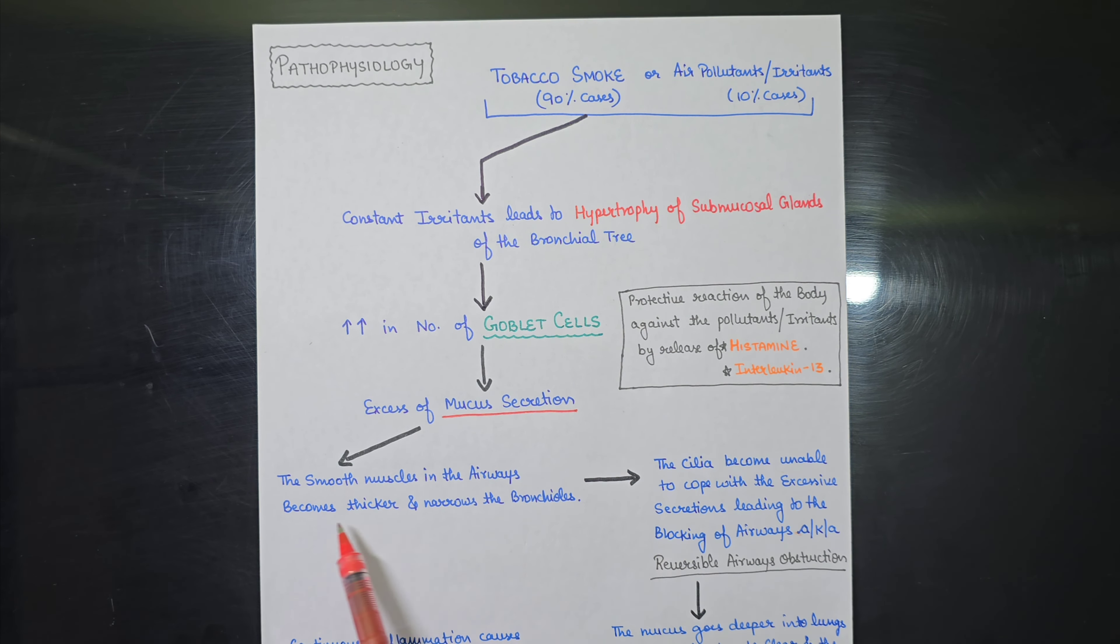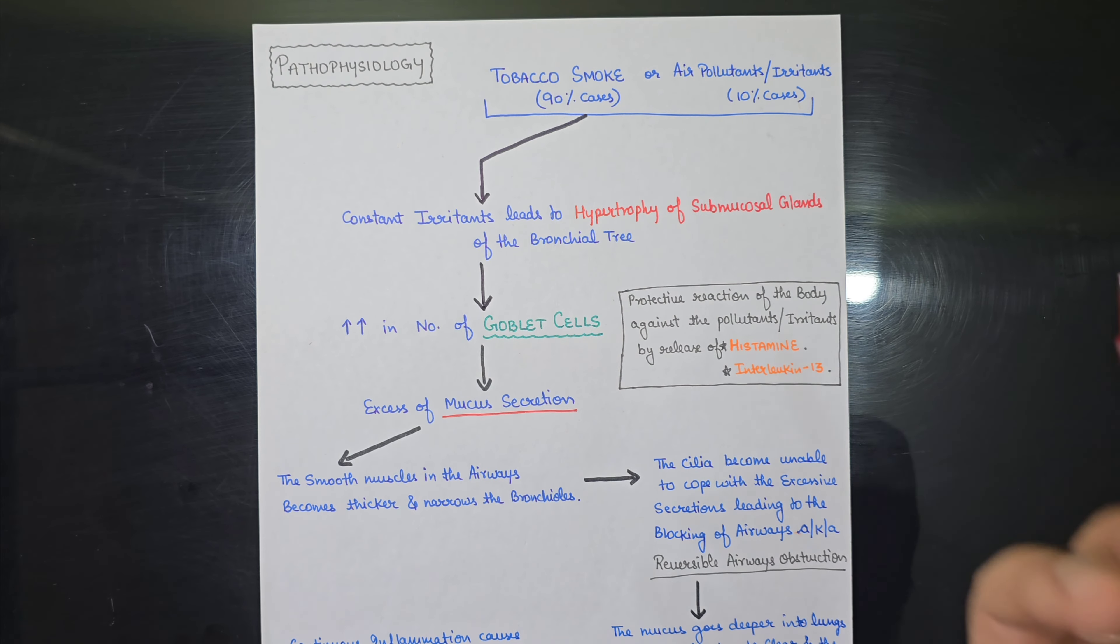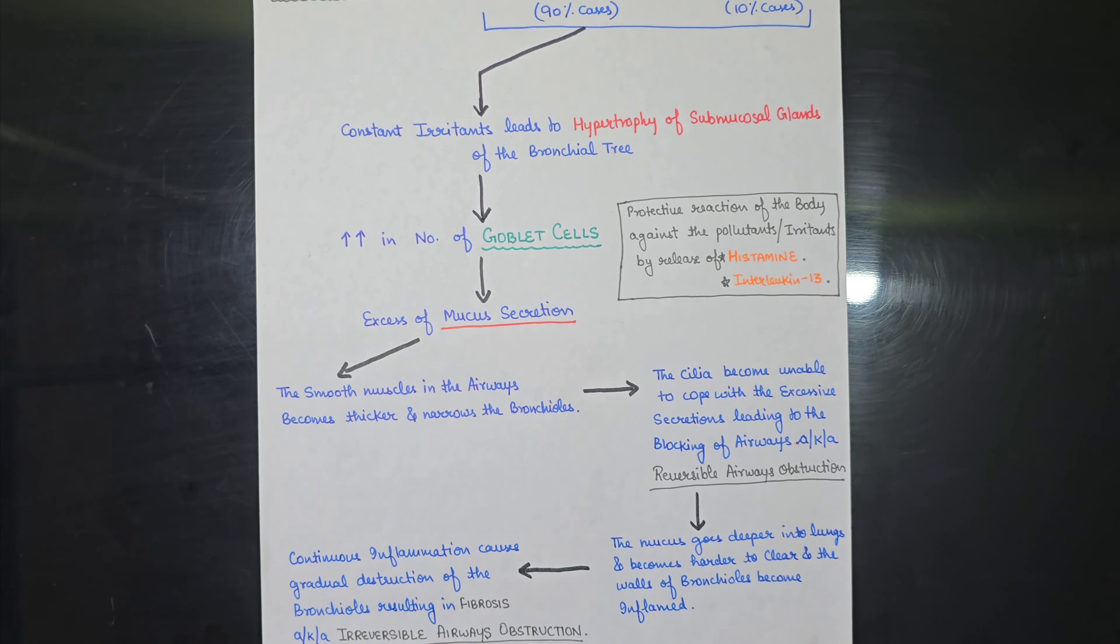And due to excess of mucus secretion, the smooth muscles in the airways become thicker and narrows the bronchioles. So mucus will be more secreted. The smooth muscles in the airways become thicker and narrows the bronchioles.